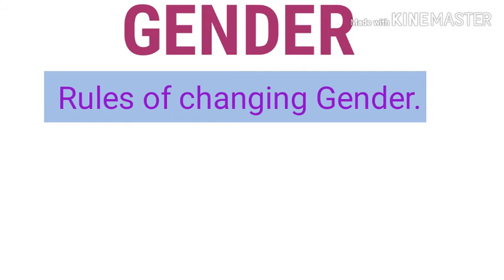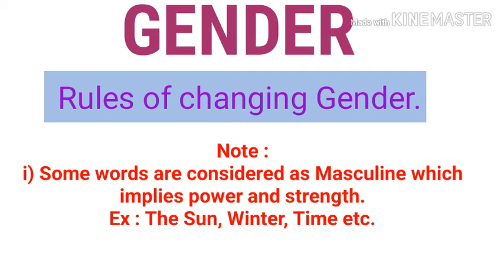Besides these rules, there are certain important things to note. Certain words like sun, summer, winter, and time are used in masculine form, because these words denote strength or power. So we do not refer to the sun as 'she' — we say 'he'. The sun, winter, and time are all identified as masculine gender.